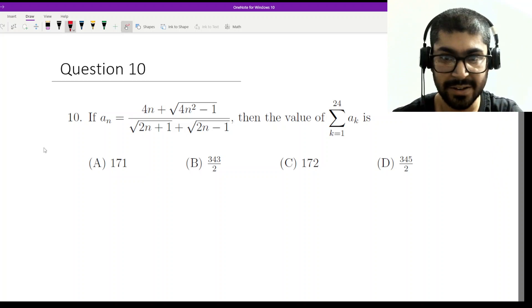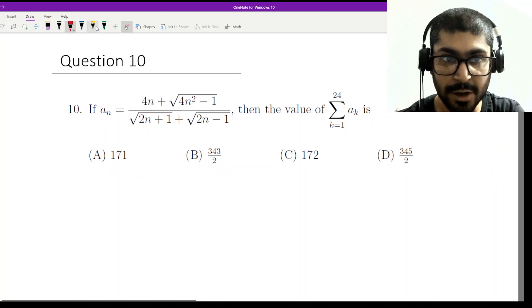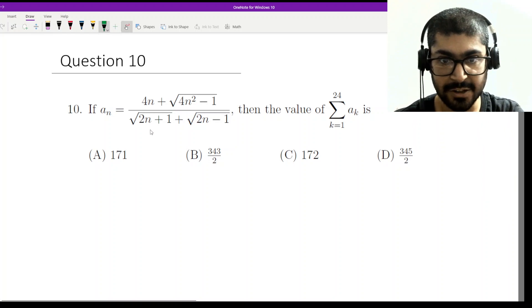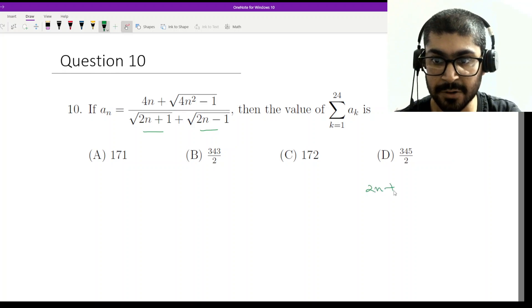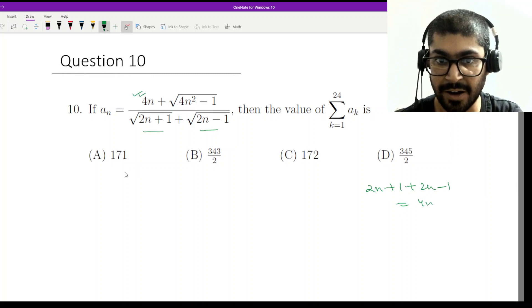Now how do we simplify this expression? To simplify this expression you just have to look into the formula. So what does this look like? You can see that we have 2n plus 1 and 2n minus 1. What happens if you add them? 2n plus 1 plus 2n minus 1 add up to 4n and that is what you have here.